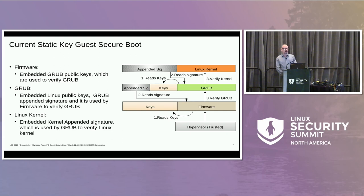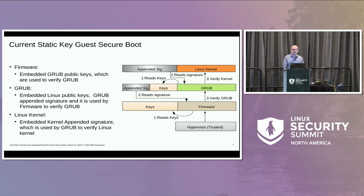This is the current state of affairs for Secure Boot. The firmware has embedded keys and the hypervisor brings up the firmware. The firmware verifies grub, and then grub further has embedded keys and an appended signature, which is what the firmware used to verify grub. The Linux kernel further has an appended signature, and grub can use the embedded keys to verify it. It works, but it's not scalable — very painful to manage when you have to do key rotations, and we have had to do key rotations.